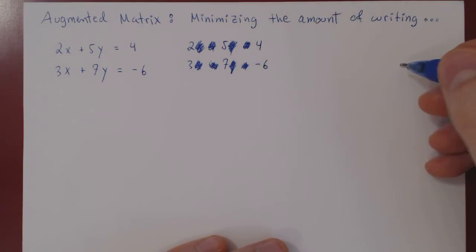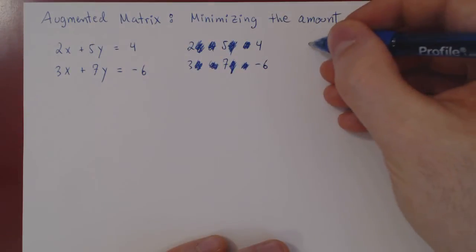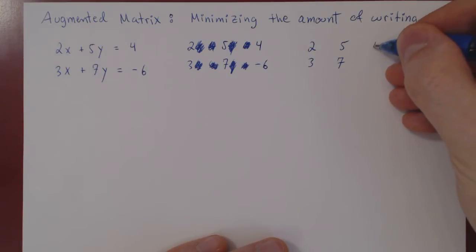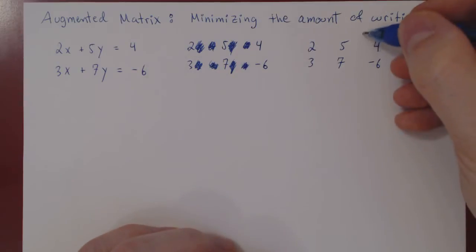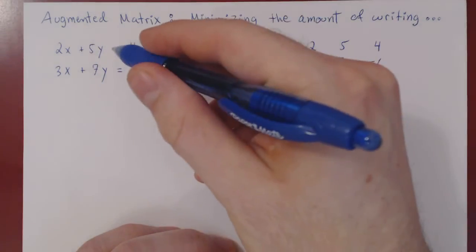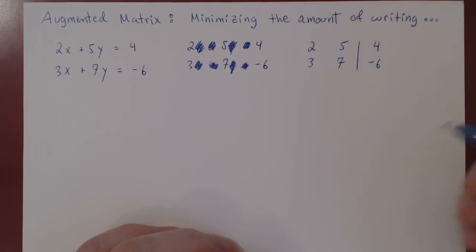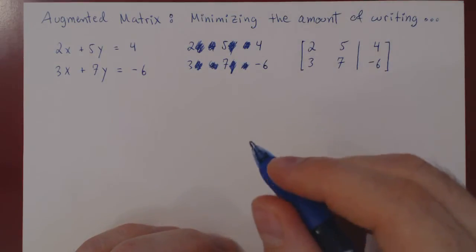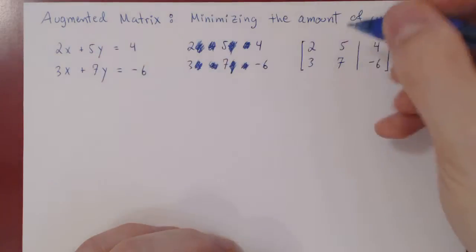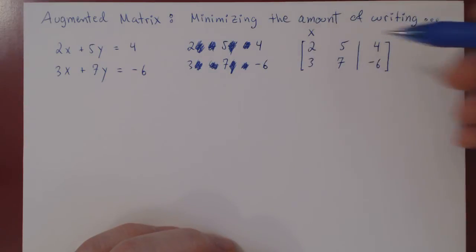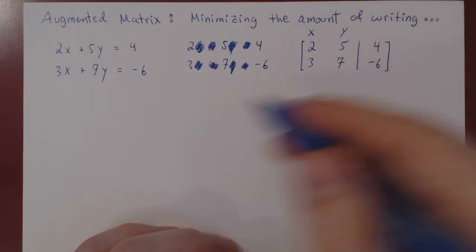All we really need to keep track of and write down are the coefficients and the constant terms. This is what we call the augmented matrix of the linear system. We have our coefficients 2, 5, 3, and 7, and our constant terms 4 and negative 6. We add a vertical bar to separate the coefficients from the constant terms — the equal sign is replaced by a vertical bar. We add square brackets on the left and right, and we label x on top of the first column and y on top of the second. And that's it — this is the augmented matrix of this linear system.